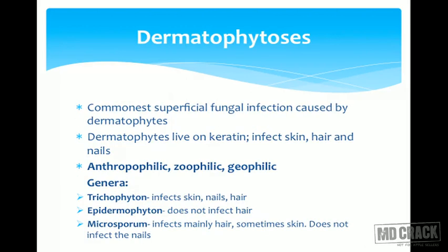Coming to ringworm infections, or dermatophytosis. The word dermatophytosis means love for keratin — these organisms survive on keratin and are found on the superficial layers of the skin. This is the commonest superficial fungal infection. Depending on source, dermatophytes can be anthropophilic (human to human), zoophilic (animals to humans), or geophilic (soil to humans).